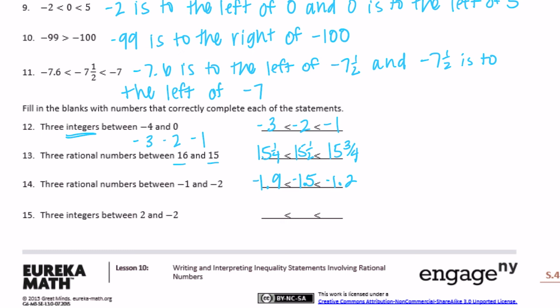Three integers between two and negative two. Integers are whole numbers, so between two and negative two that would be zero, one, and negative one. Going from least to greatest: negative one is less than zero, which is less than one.